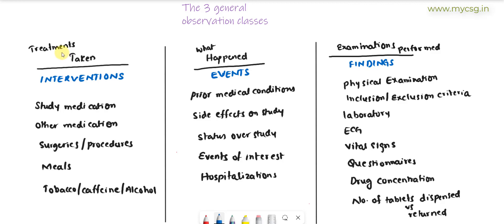For interventions, remember the phrase 'treatments taken'; for events, 'what happened to the subject'; and for findings, 'examinations performed on the subject.' In every clinical trial we compare our investigational product with a placebo or an existing medical product. We call those study medications, and we use two domains — EC and EX — to capture information related to study treatments.